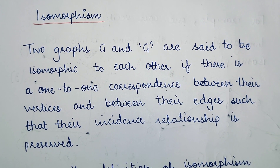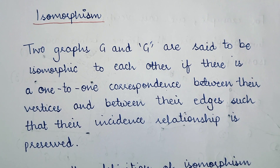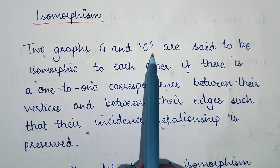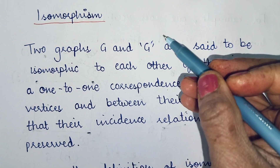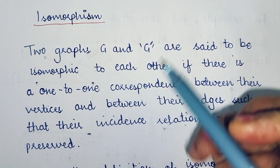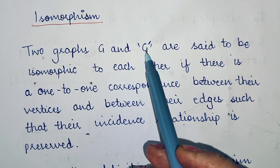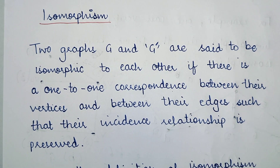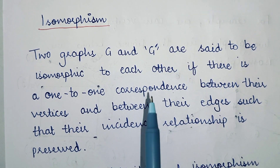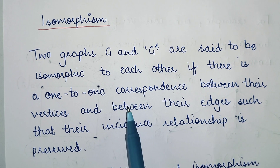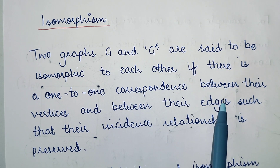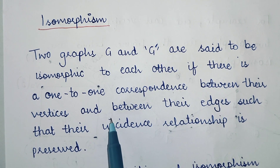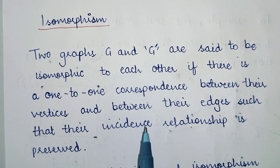Hi everyone, today we are going to study isomorphism in graphs. Two graphs G and G-hash are said to be isomorphic to each other if there is a one-to-one correspondence between their vertices and between their edges such that the incidence relationship is preserved.